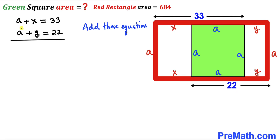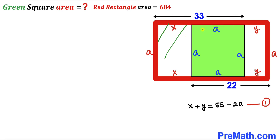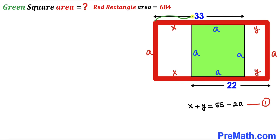Adding the two equations gives us 2a + x + y = 55. Moving 2a to the other side, we get x + y = 55 − 2a. We'll label this as equation number one. Now let's focus on the big red rectangle, whose length is a + x + y.